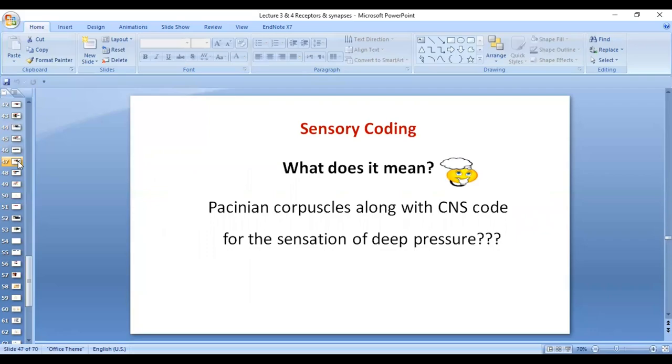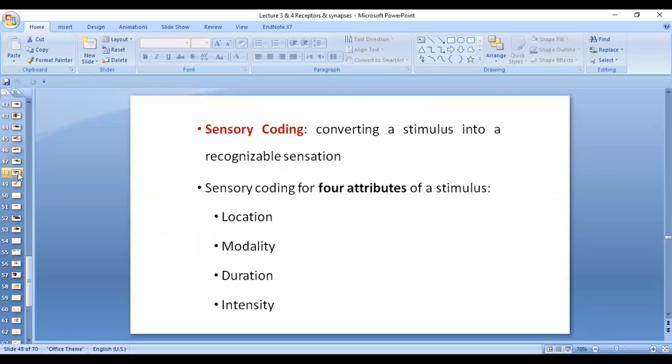So sensory coding, what does it mean? It means converting a stimulus into a recognized sensation. When the receptor, along with CNS, they code for four attributes of a stimulus. One is location of a stimulus, second modality, meaning type of the stimulation, of the sensation, duration, and intensity.